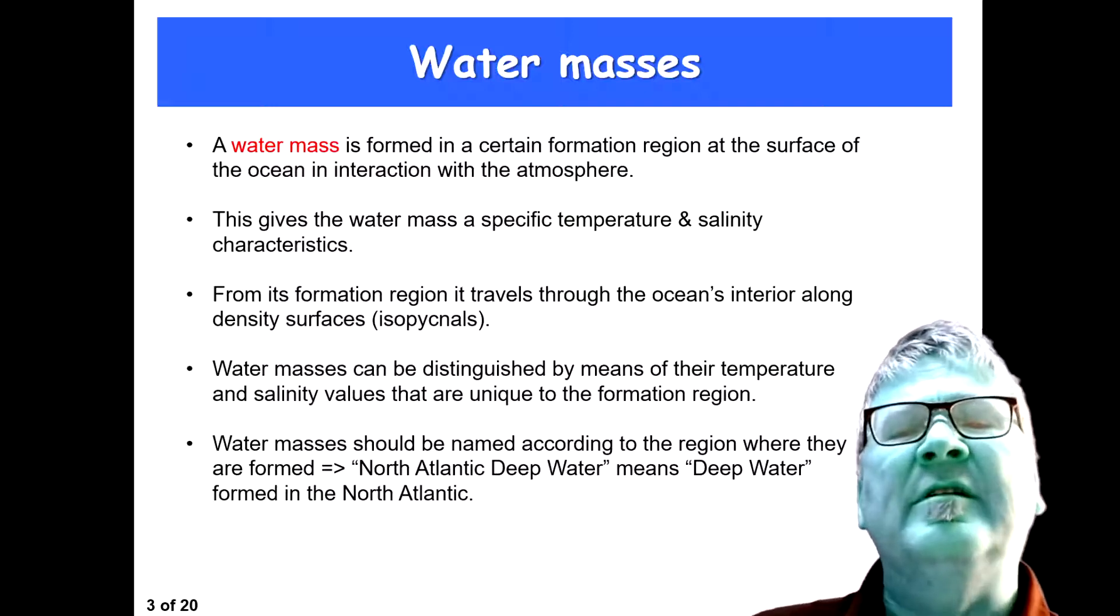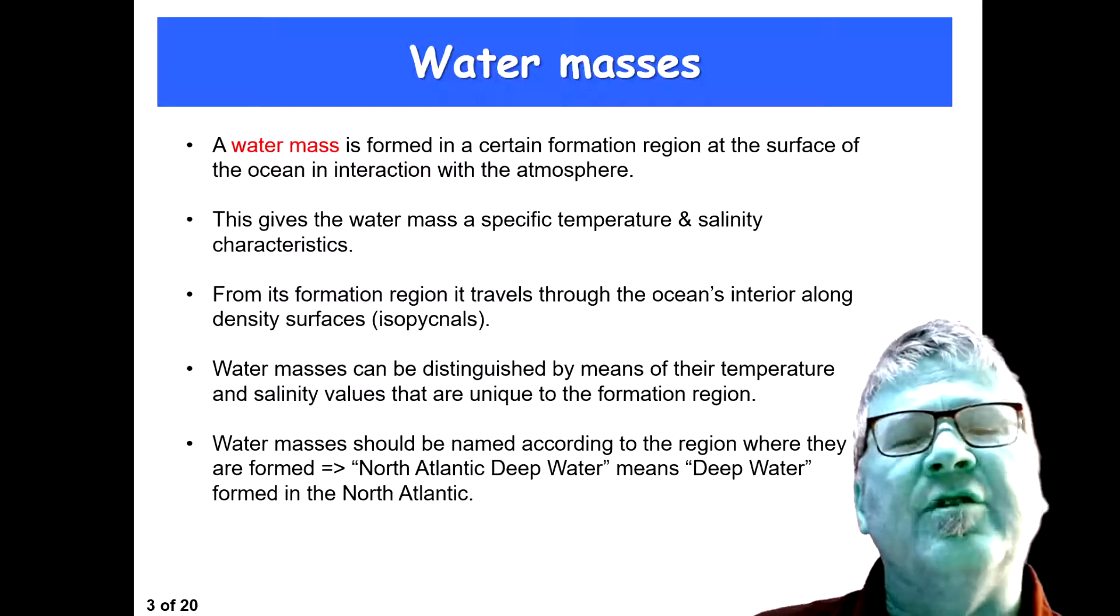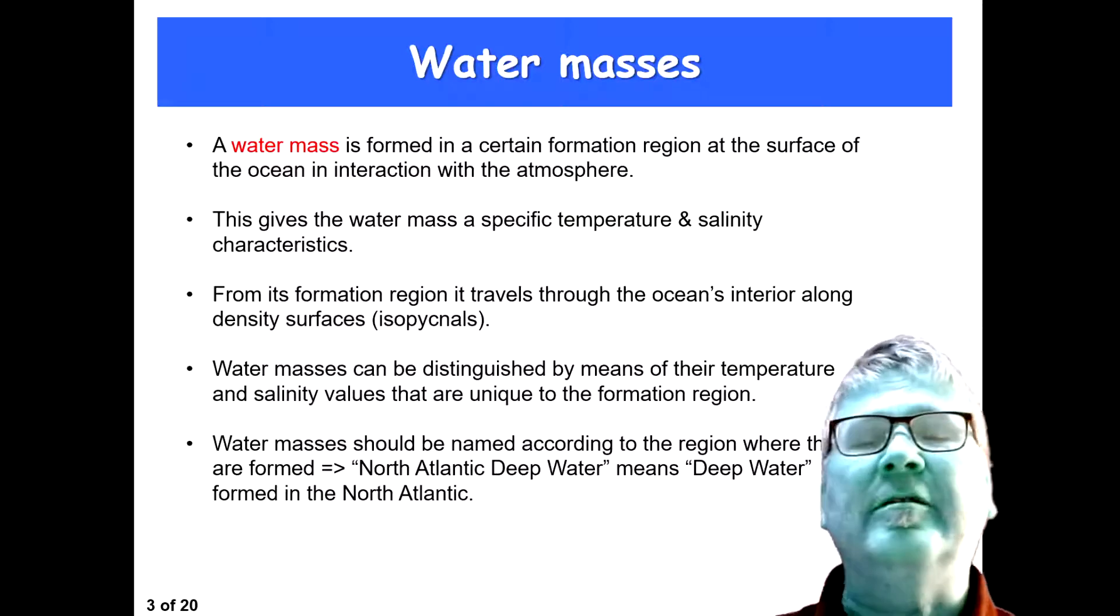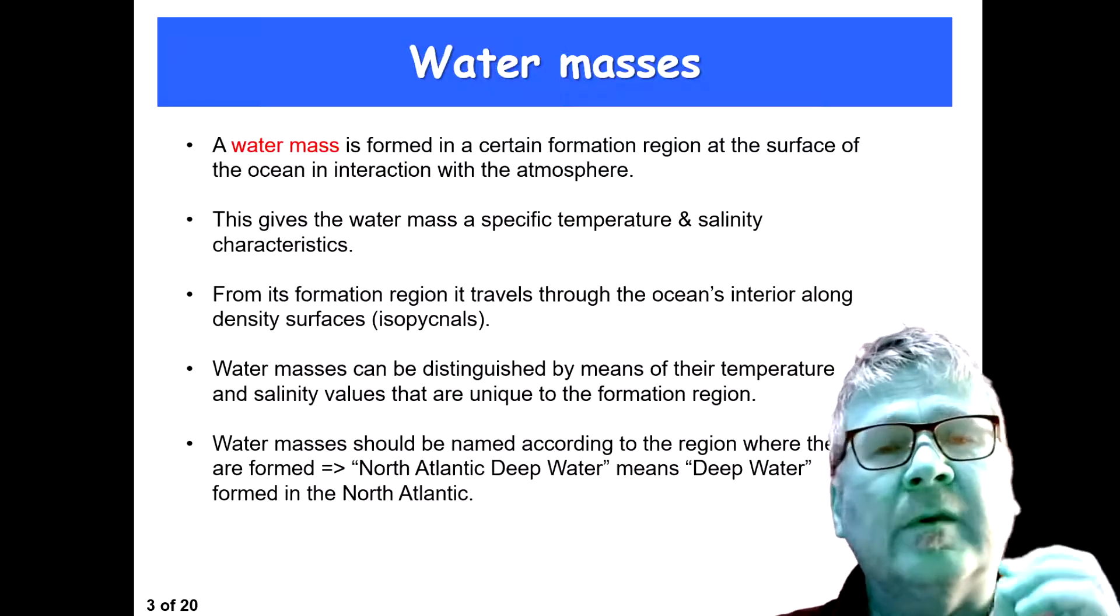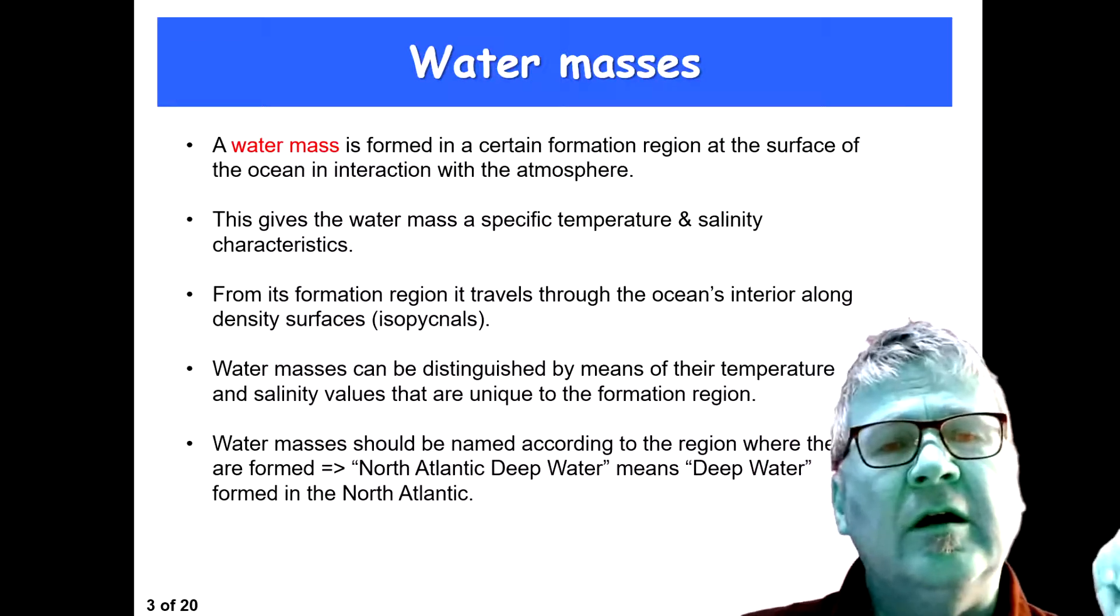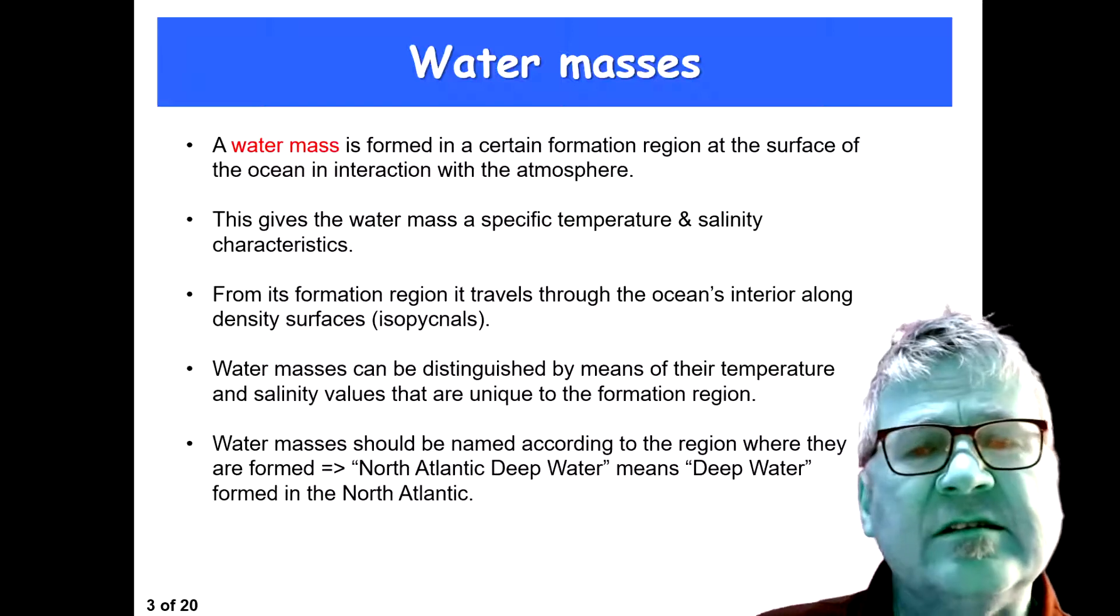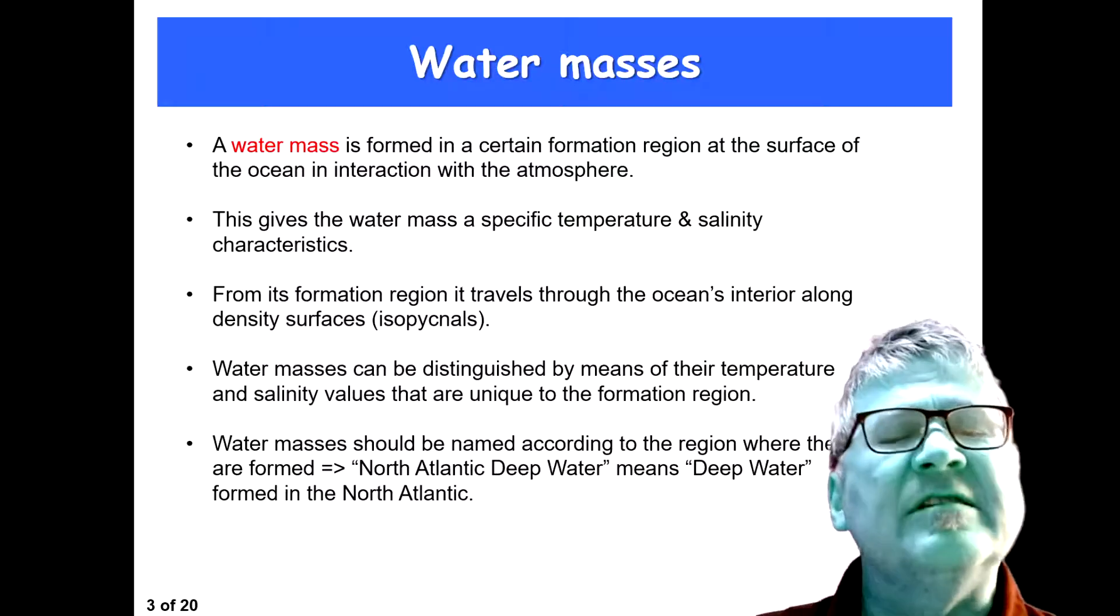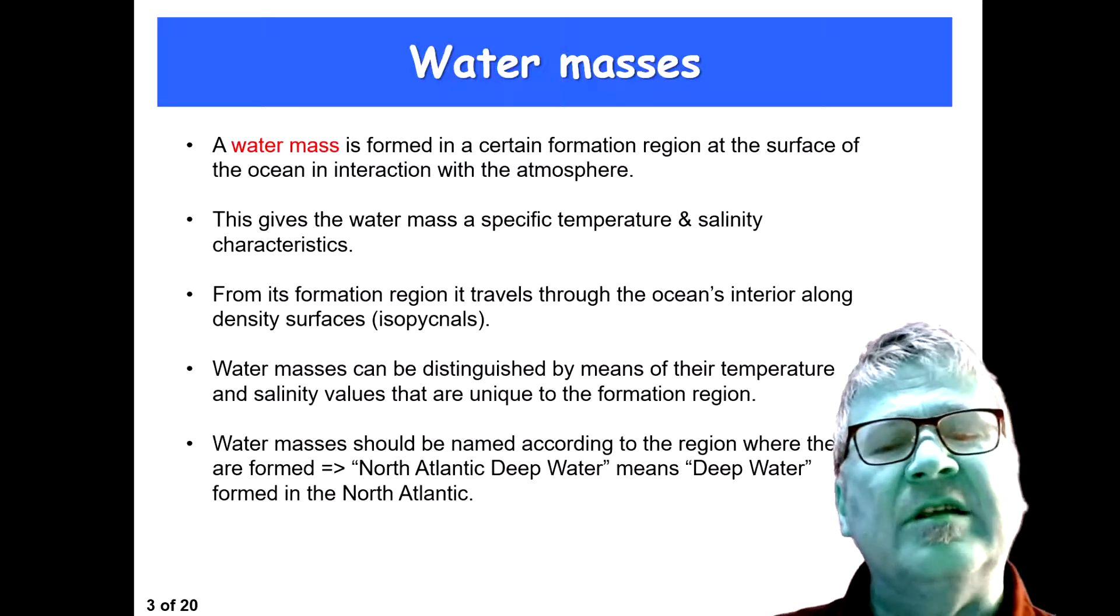A water mass is formed in a certain formation region at the surface of the ocean in interaction with the atmosphere. We're talking about air-sea heat fluxes, freshwater fluxes, and this interaction gives the water mass a specific temperature and salinity character.